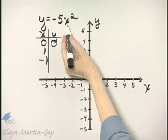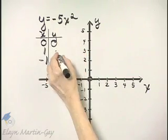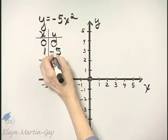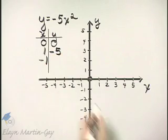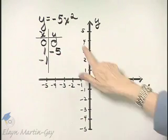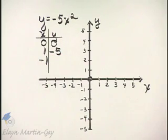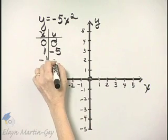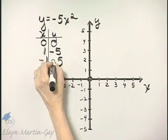If x is 1, 1 squared is 1, 1 times negative 5 is negative 5. Same thing, if x is negative 1, negative 1 quantity squared is 1, 1 times negative 5 is negative 5.